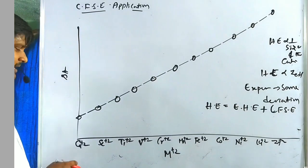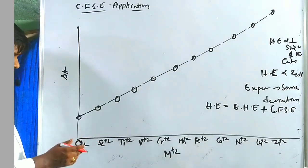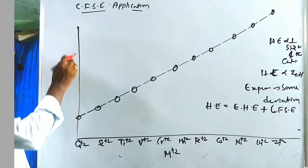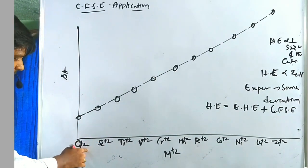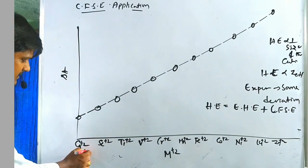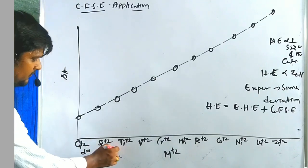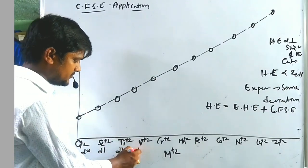The deviations are explained by CFSE values. The actual hydration energy equals the expected hydration energy plus the CFSE value. This was confirmed experimentally — expected hydration energy plus crystal field stabilization energy together give the perfect hydration energy.